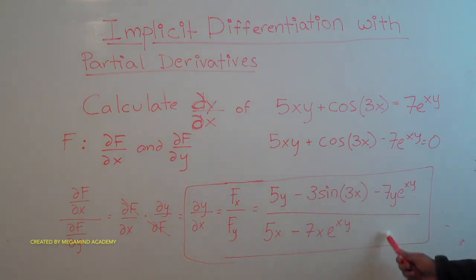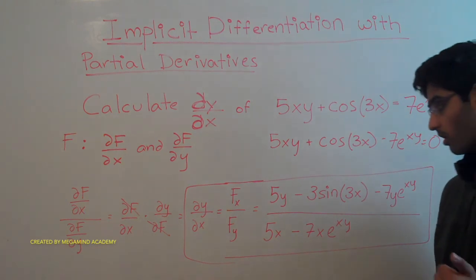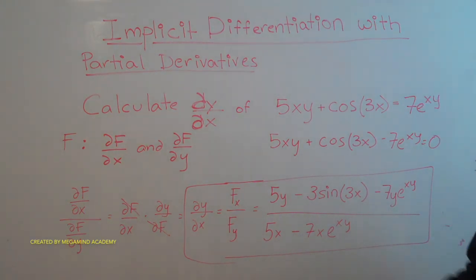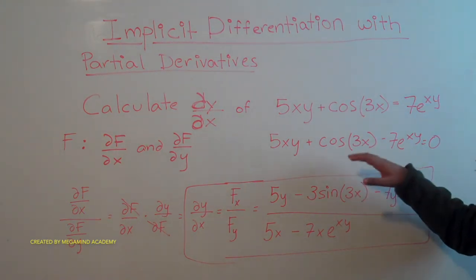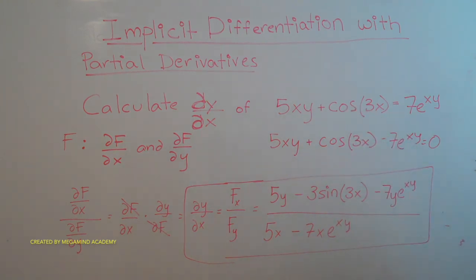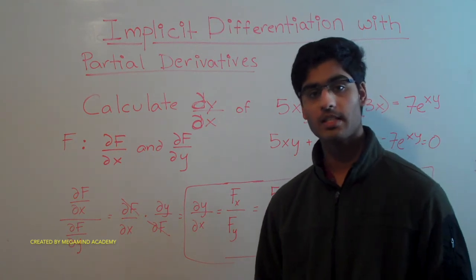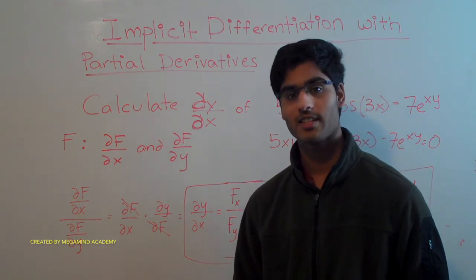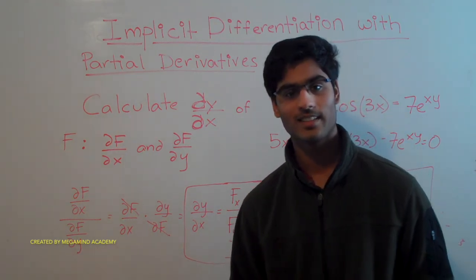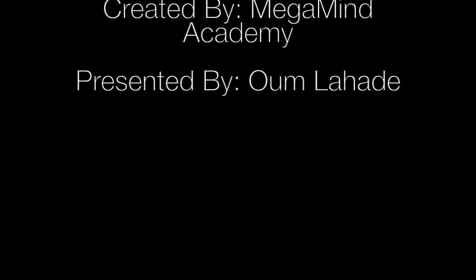As you can see, this would have been a whole lot more work if you were using the Calc 1 way of doing implicit differentiation. However, with partial derivatives, this is a lot faster. Today we learned about doing implicit differentiation with partial derivatives. Thank you for watching this video!